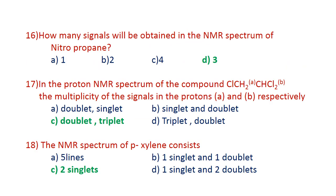Question number 16: how many signals will be obtained in the NMR spectrum of nitropropyl? The formula is CH3-CH2-CH2NO2. CH3 gives one signal, the first CH2 gives another signal, and CH2NO2 gives one more signal. Therefore three signals are possible for this compound. Answer D is correct.